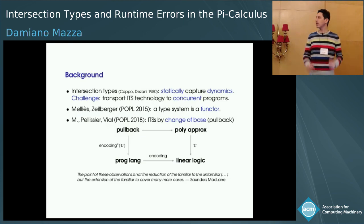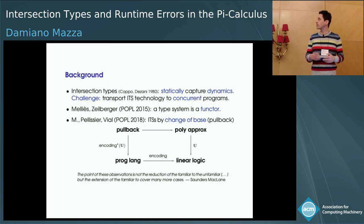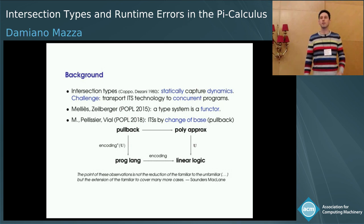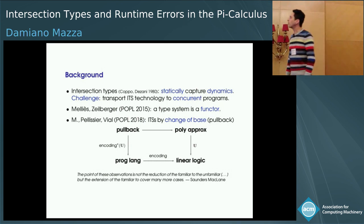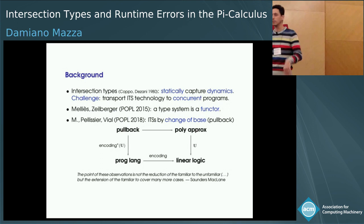This is about intersection types. I hope that most of you have at least heard about intersection types. They are a very versatile and powerful methodology for capturing dynamic properties of programs — of functional programs — such as characterizing exactly the programs that have a head normal form, or that are strongly normalizing, or whatever.